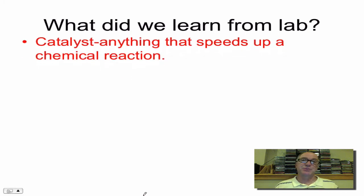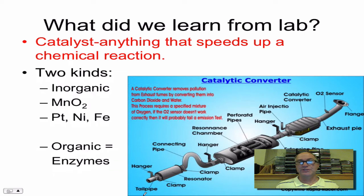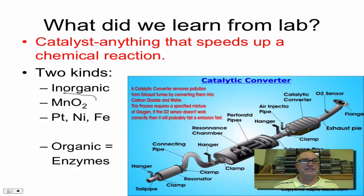One thing we learned, and it's important to know this, is that a catalyst is anything that speeds up a chemical reaction. Now there are two kinds of catalysts. One is an inorganic catalyst. An example of that might be MnO2 — manganese dioxide — that black powder that you added to the peroxide. You saw that it certainly speeded up the bubbling of the reaction.